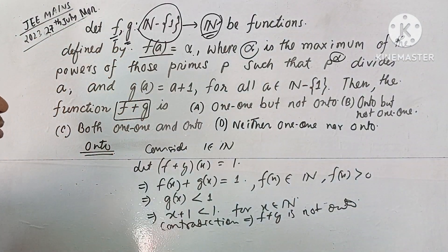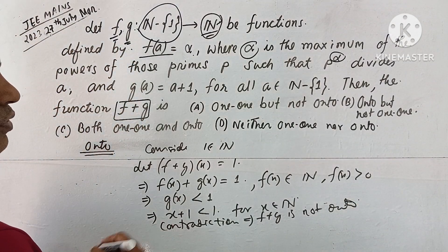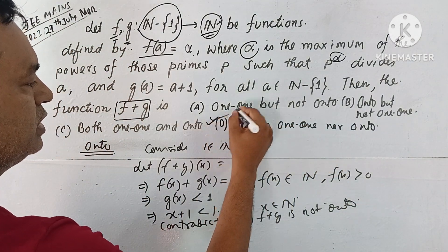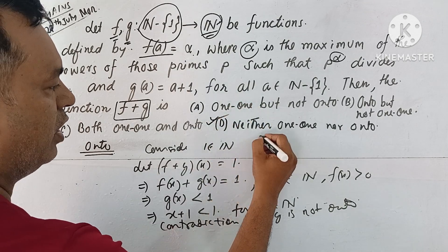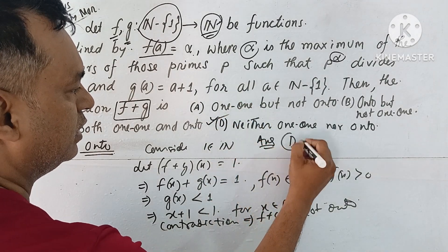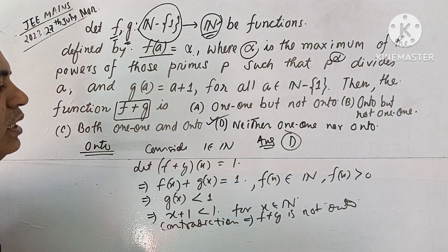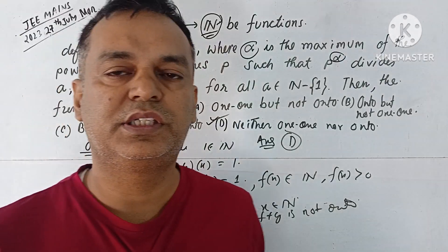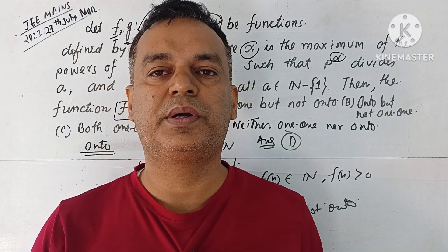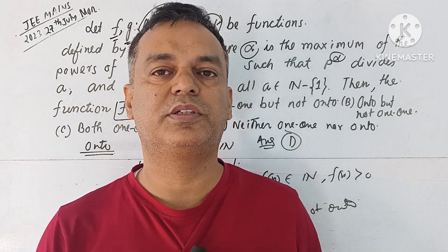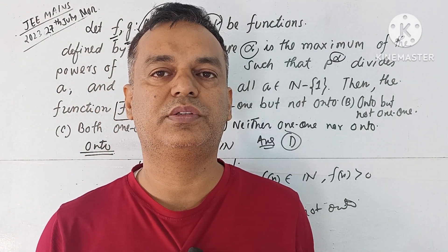F+G is neither one-one nor onto. Therefore the answer is D. That is the answer to this problem. Please like, share and subscribe to the channel. Thank you very much.